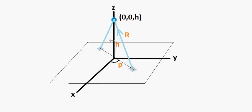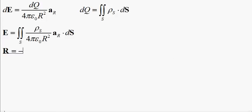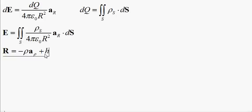So we have a coordinate in the Z direction of H, and we're going to have a coordinate in the rho direction. But the interesting thing to note is that the coordinates are not going to be just rho in the rho direction and H in the Z direction — it's actually going to be rho in the negative rho direction. So we have negative rho A sub rho, and we have H A sub Z.